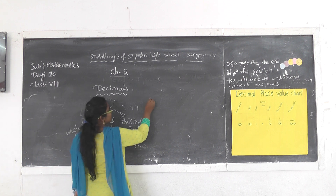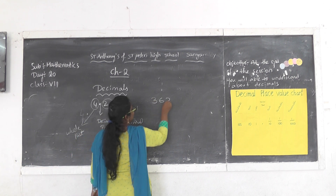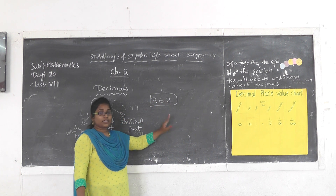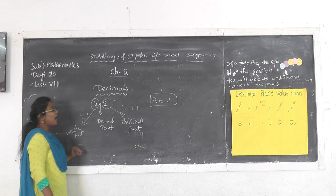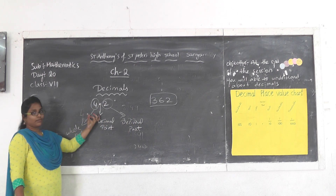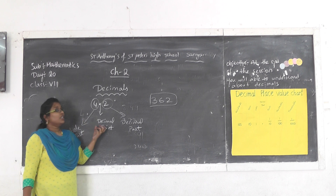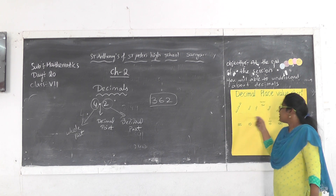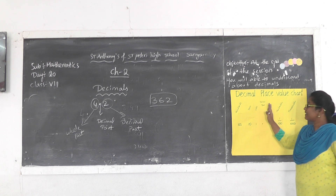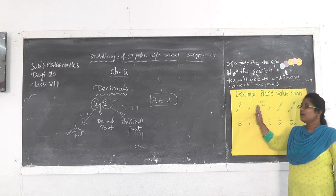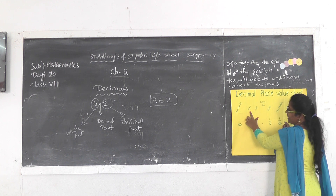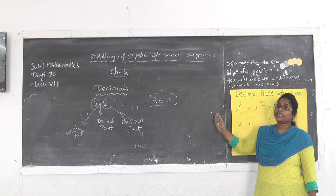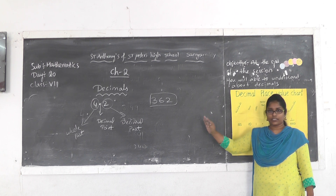Now, how do we read decimal numbers? Here is the decimal place value chart. Decimal point left side will be: units, tens, hundreds, thousands, ten thousands, lakhs, ten lakhs, and so on.